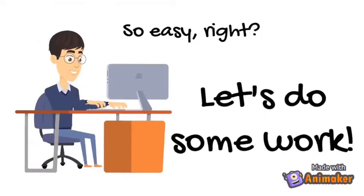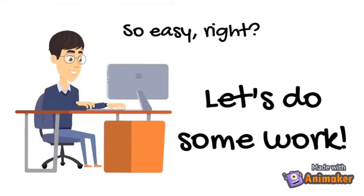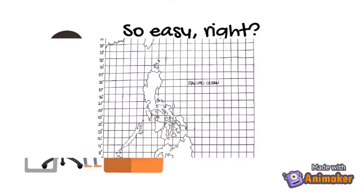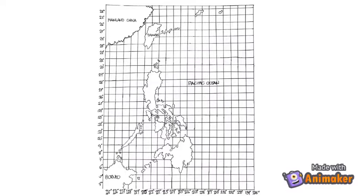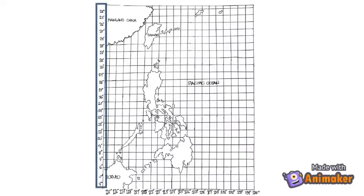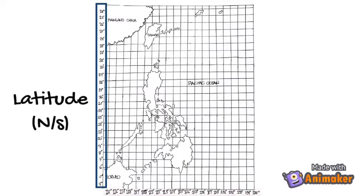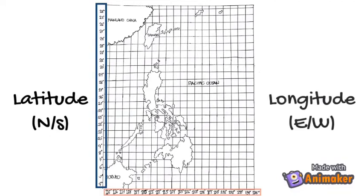It's so easy, right? I think you are ready for a short activity. Come on, let's do some work. Here's a sample map. The values in the y-axis correspond to the latitude, dividing the Earth to north and south of the equator. On the other hand, the values in the x-axis correspond to the longitude, dividing the Earth to east and west of the prime meridian.